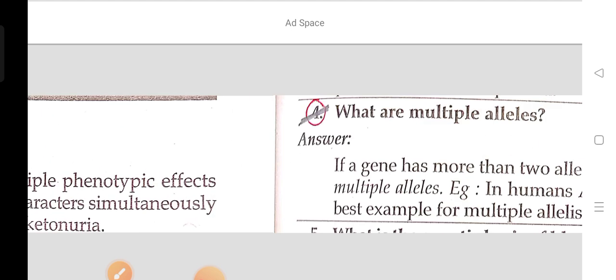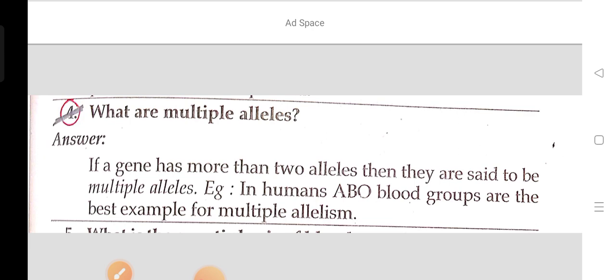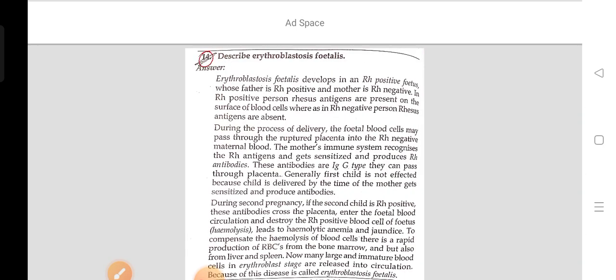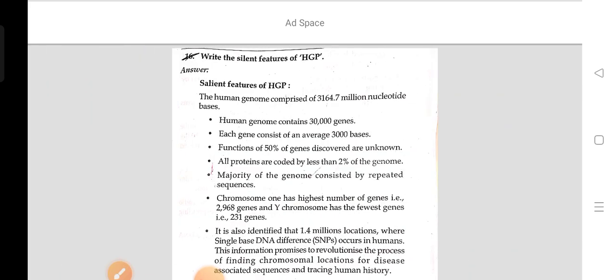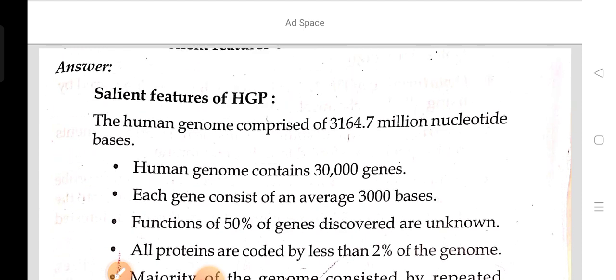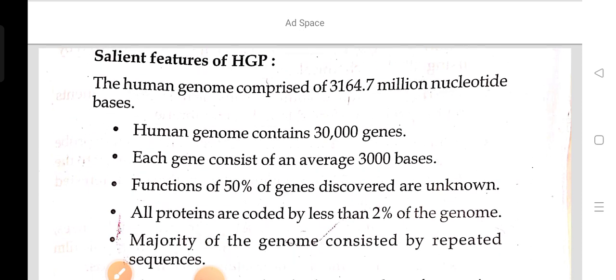What is pleiotrophy? What are multiple alleles? What is Klinefelter syndrome? What is Turner syndrome? Describe erythroblastosis fetalis. What are the salient features of the HGP, Human Genome Project?